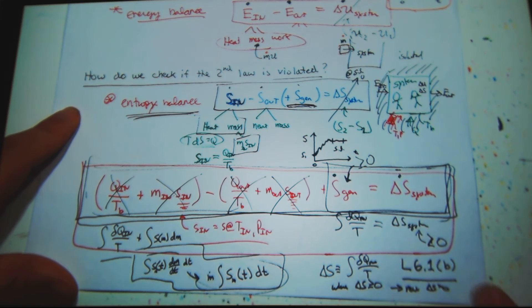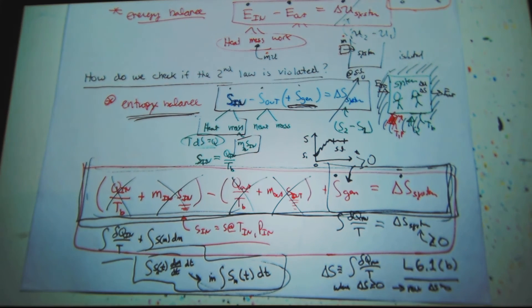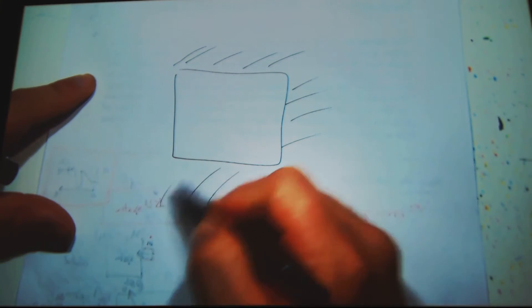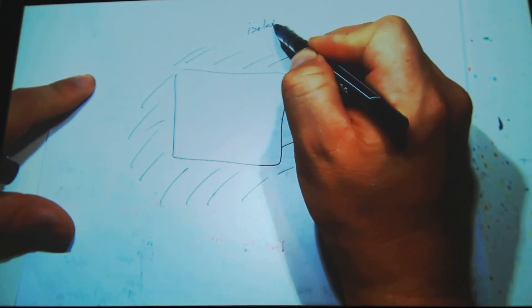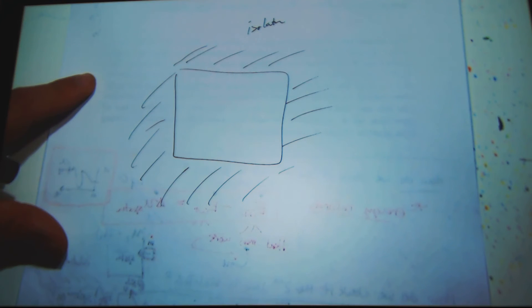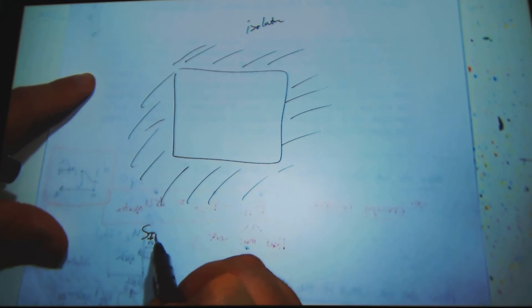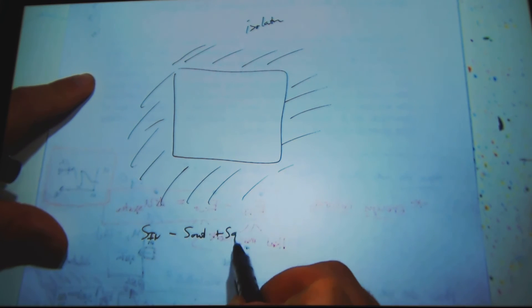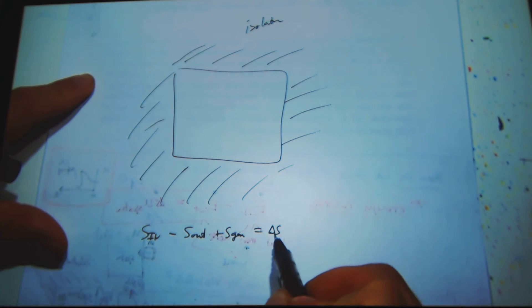How would you go from one equilibrium state to another equilibrium state if the system is isolated and it's at equilibrium — just in the system itself? So if I draw it, I have a system. It's isolated. So: n-in minus n-out plus n-generated equals the change in n in my system.